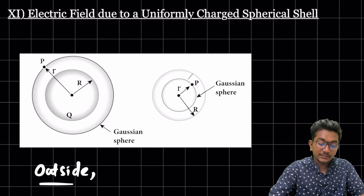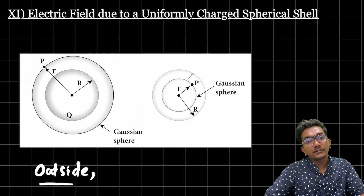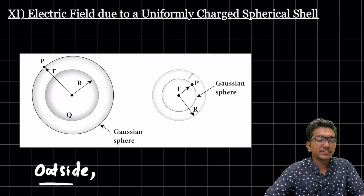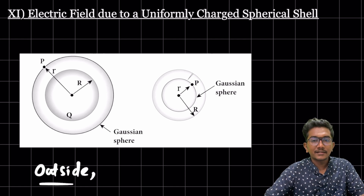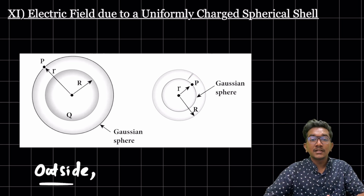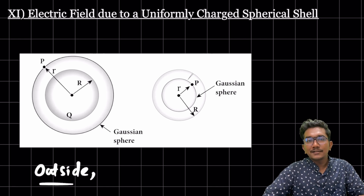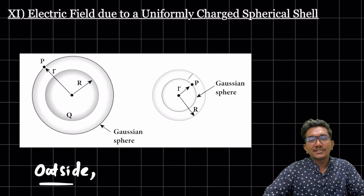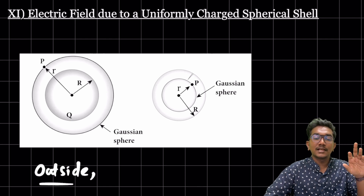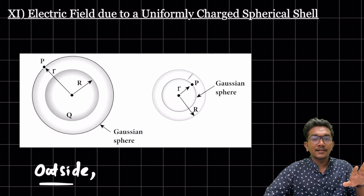For the outside case, I consider a distance small r from the shell and create a Gaussian surface there. Many students ask how to choose the Gaussian surface. Two things to keep in mind: first, symmetry, and second, whether the charge distribution is fully enclosed. Gauss already gave us all the Gaussian surfaces we need for our purposes.